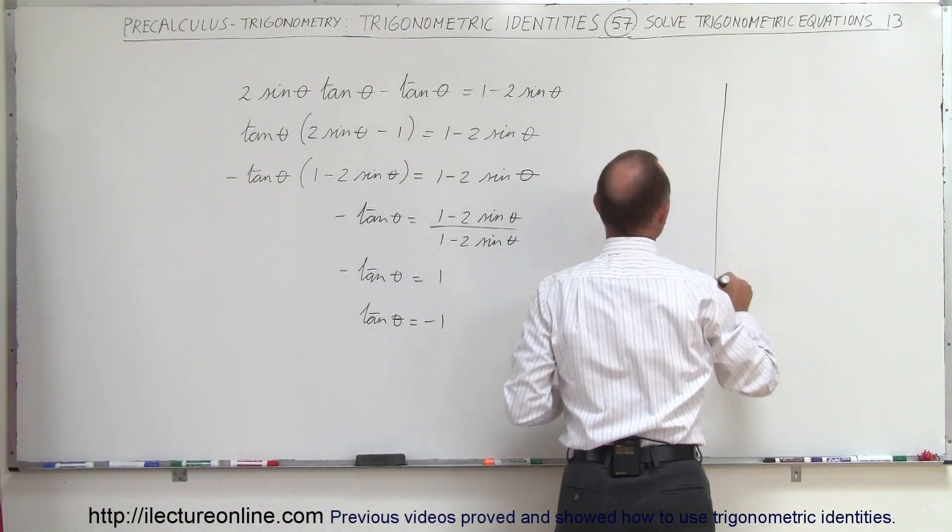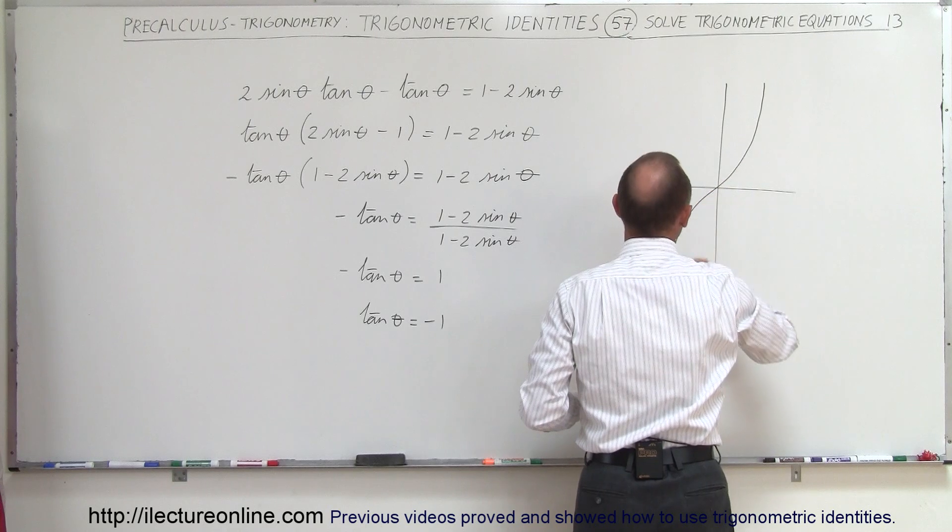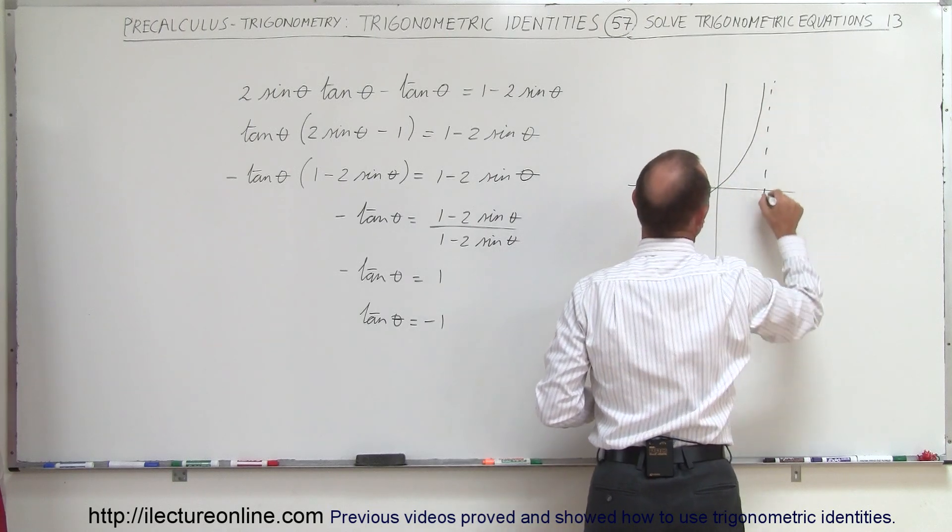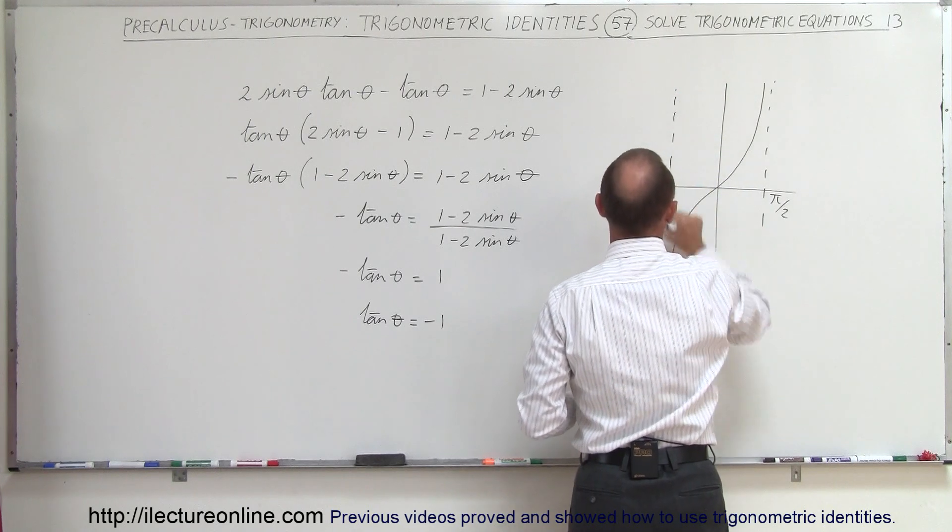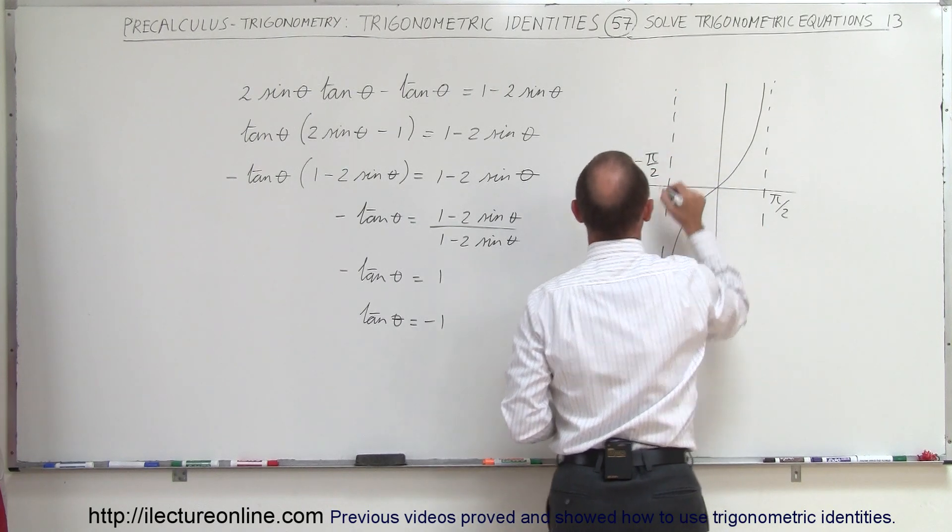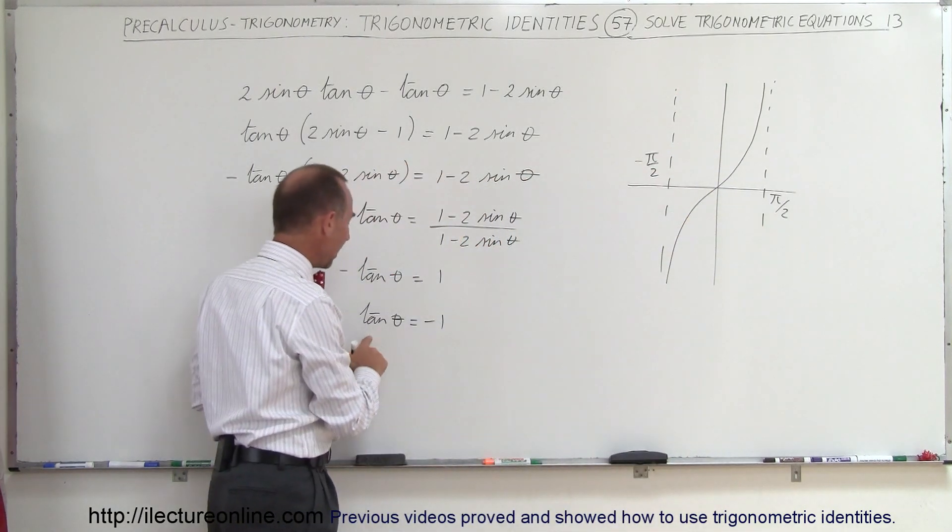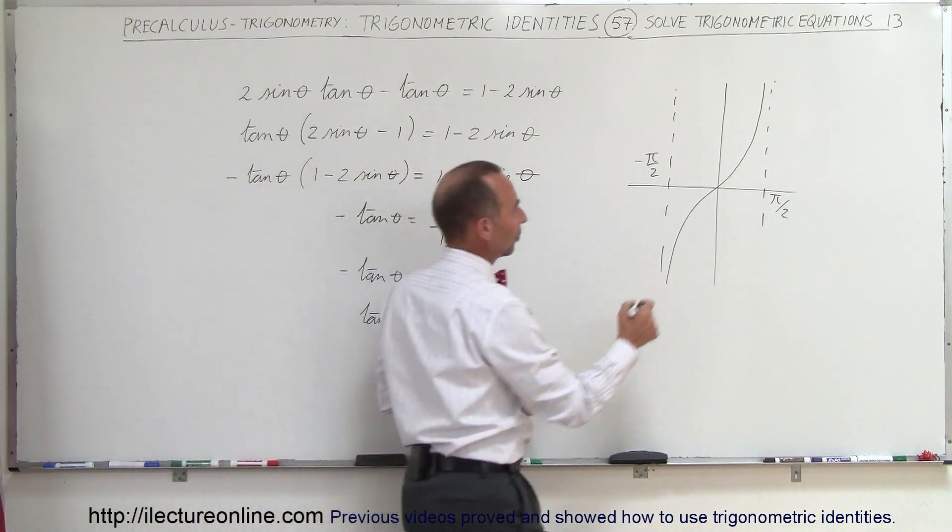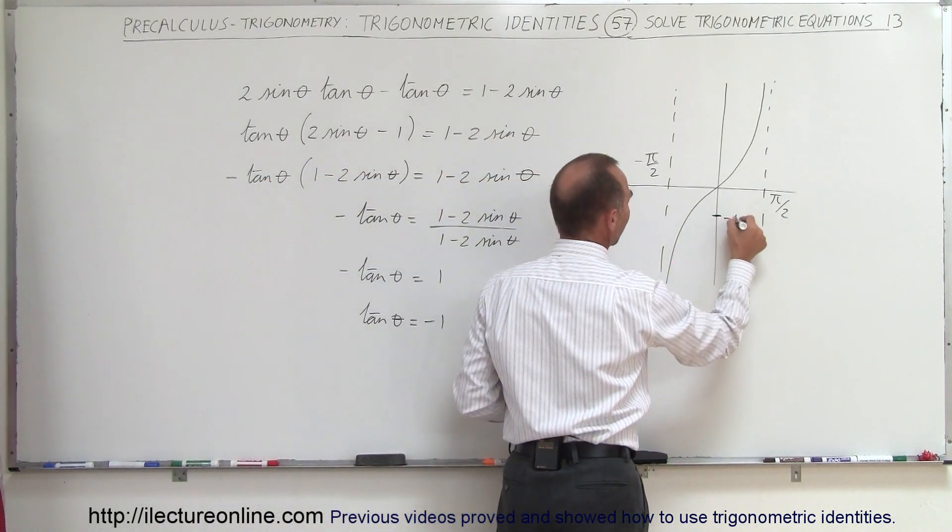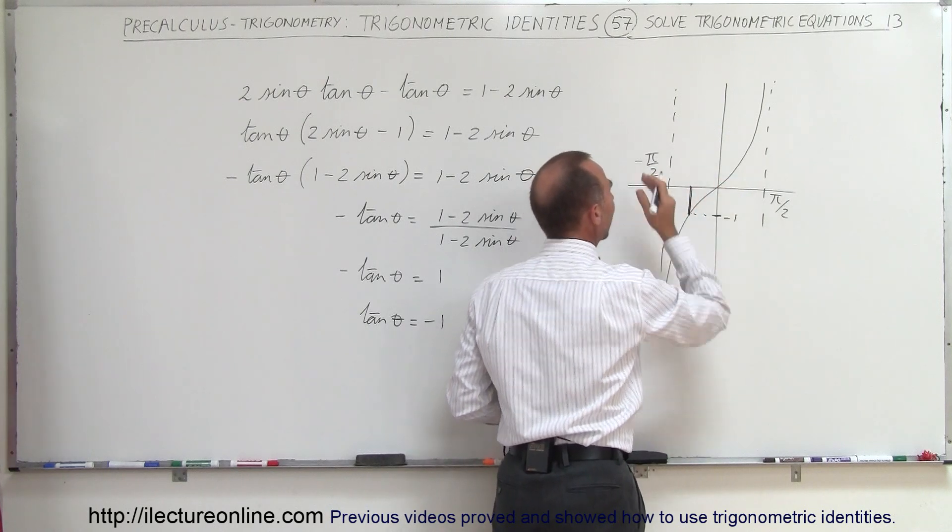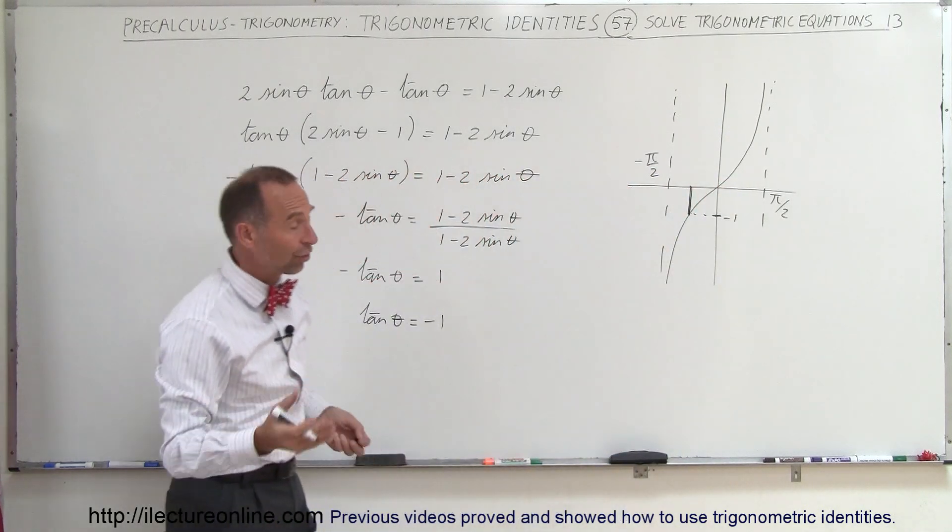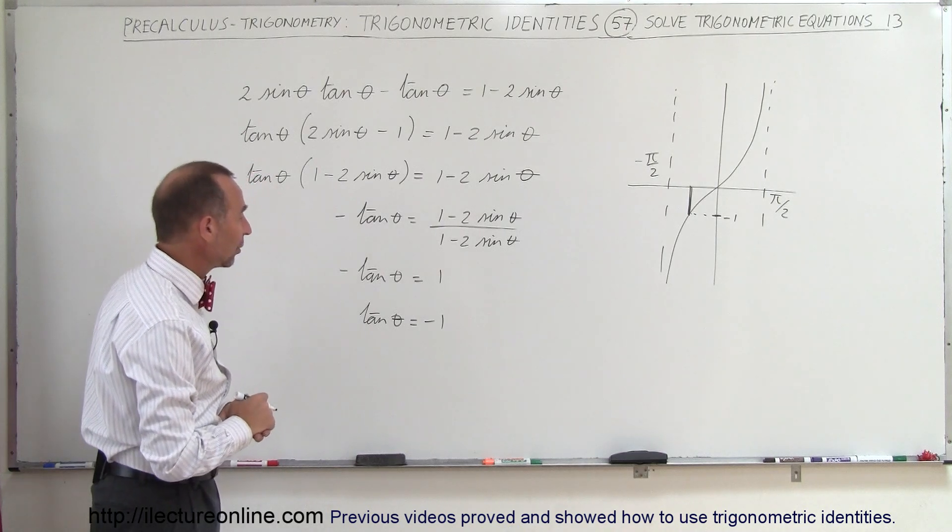If we graph out the tangent of theta, it looks like that. Of course we have the limits on one side, pi over 2, on the other side negative pi over 2. I'm looking for the angle such that the tangent of the angle is negative 1, so negative 1 would be right here. It would be an angle between 0 and negative pi over 2, or 0 and minus 90 degrees.